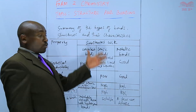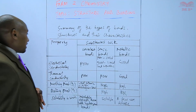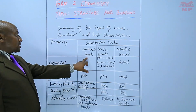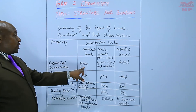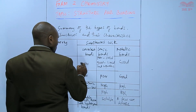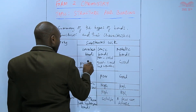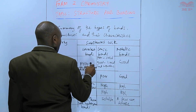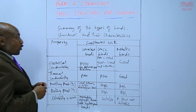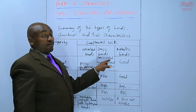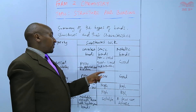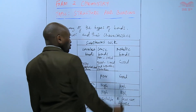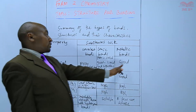This table is more or less a summary of what we have learned in the entire topic. The conductivity of covalent bonds is poor because there are no delocalized electrons. For ionic compounds, they are only poor conductors in solid form, but when you dissolve them in water or when they are in aqueous solution, they are good conductors. Metallic bonds are always good conductors.